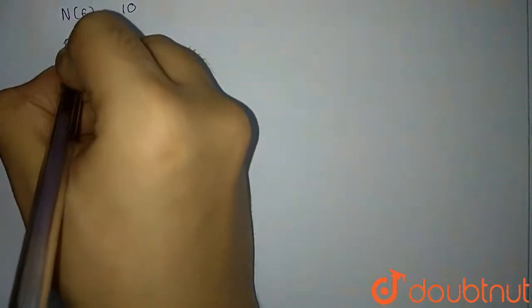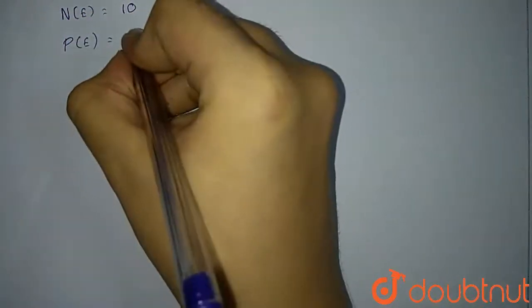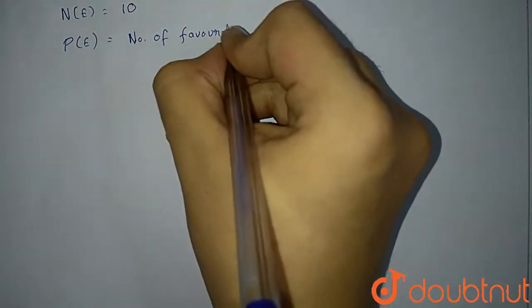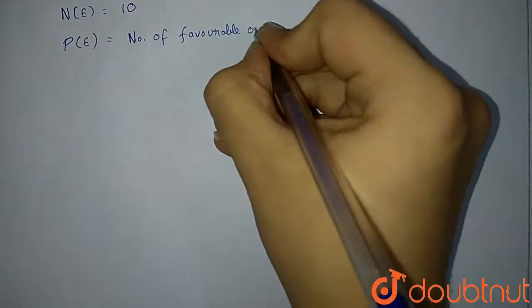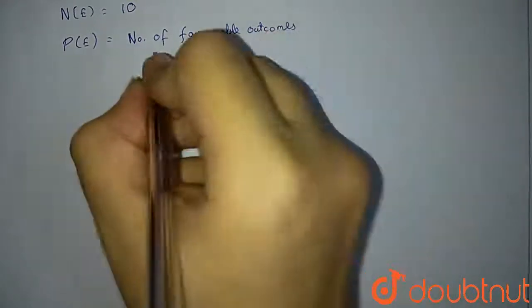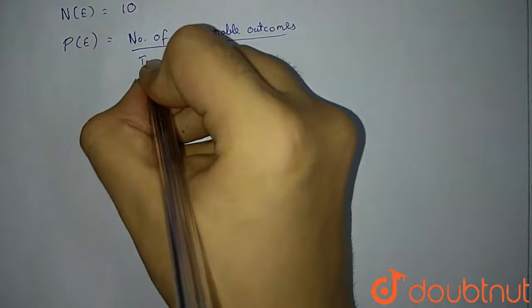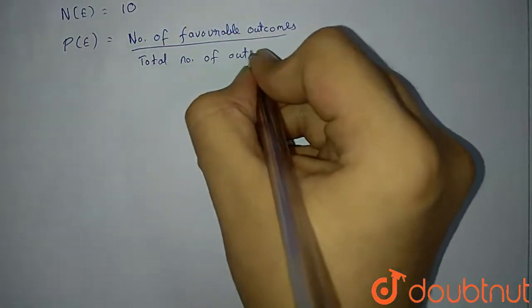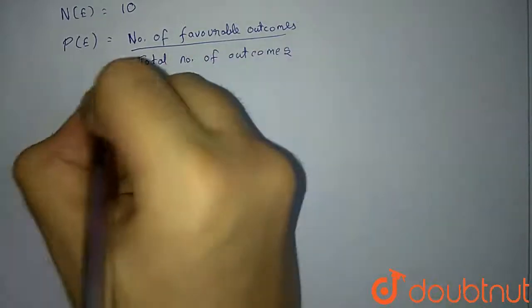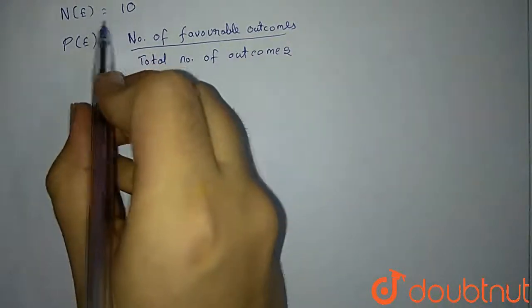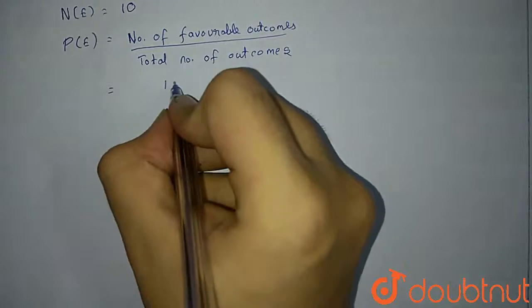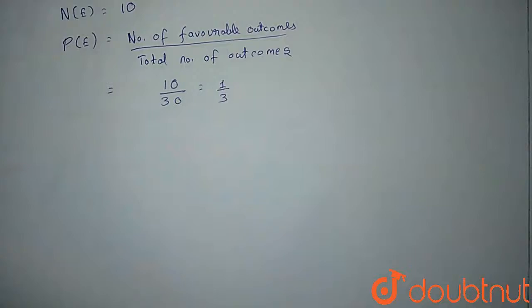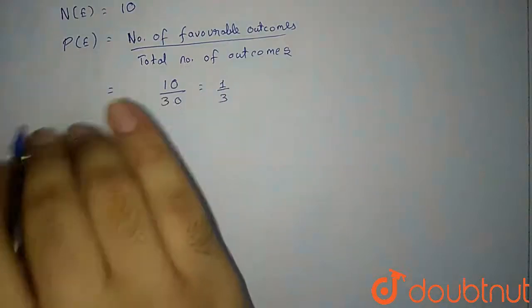Now let us calculate the probability of this event. Probability of any event E is given by number of favorable outcomes divided by total number of outcomes. How many tickets are there? There are 30 tickets and the number of favorable outcomes is 10. So the probability will be 10 upon 30, which will be one by three. We have calculated the probability for the first event.